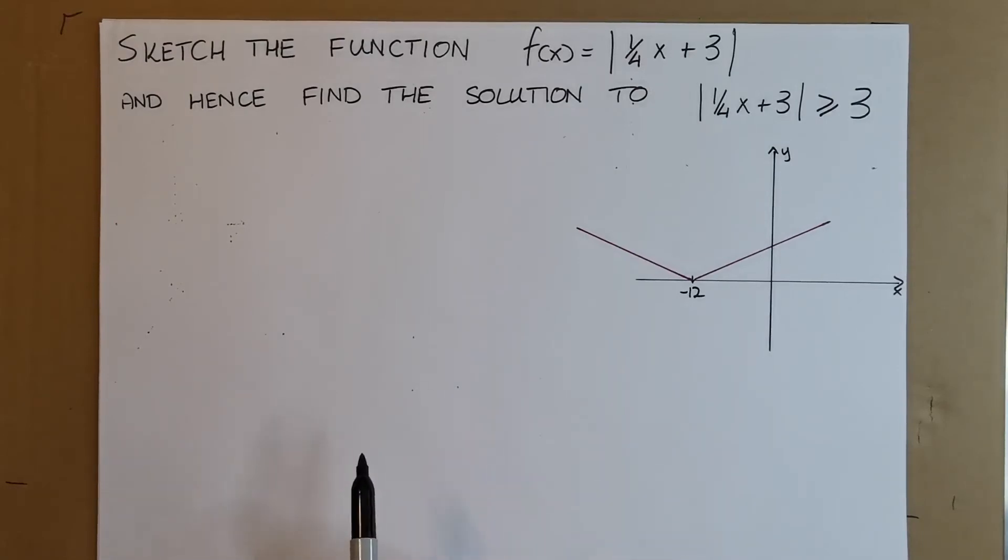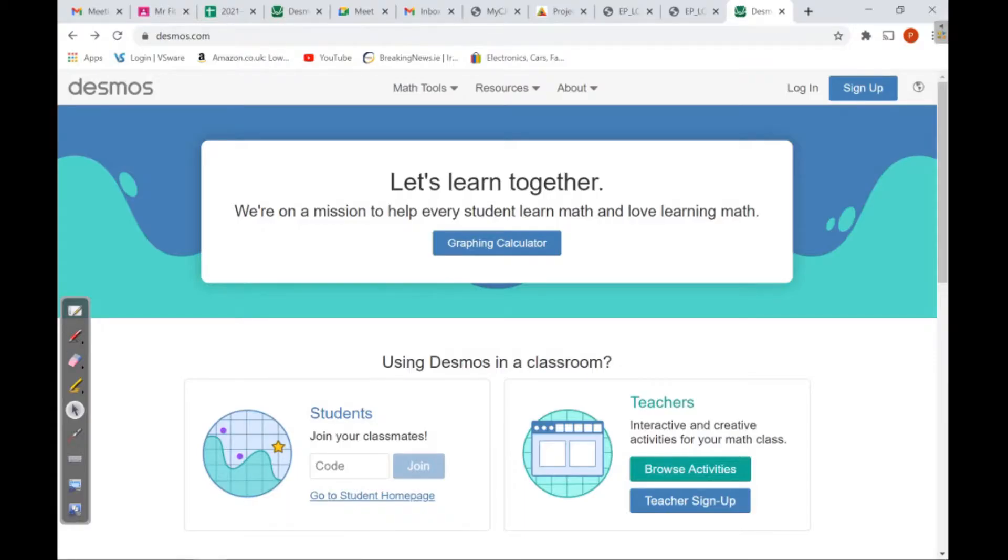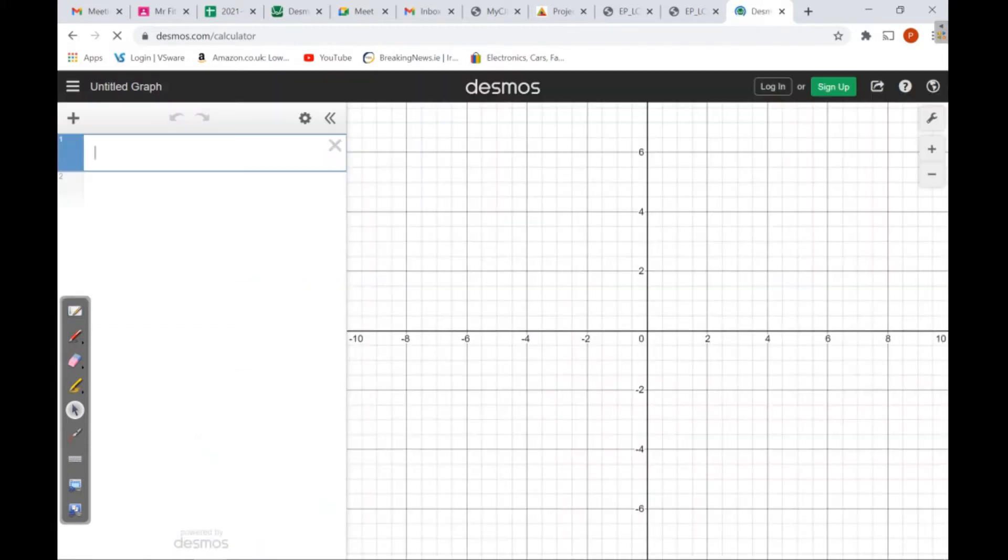There are graphing calculators; have a look and see what you think. You go to desmos.com, then to graphing calculator, and it loads up. You can type in whatever function you want, and you can type in multiple functions as well. It's pretty nice.